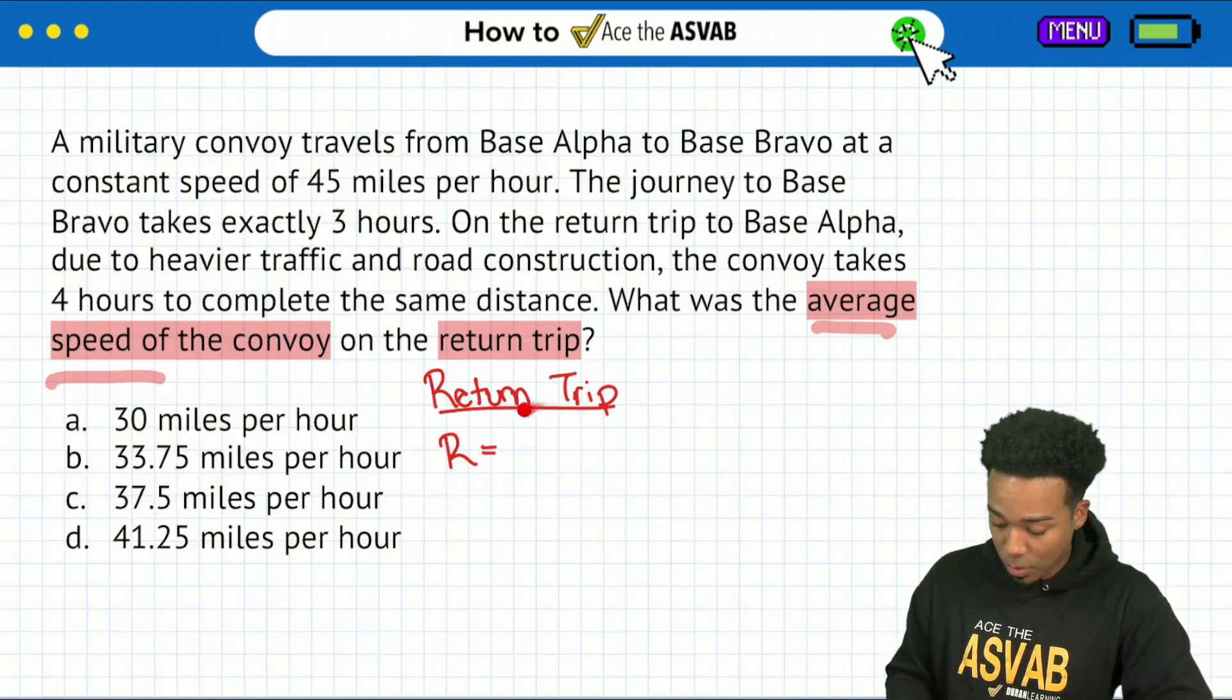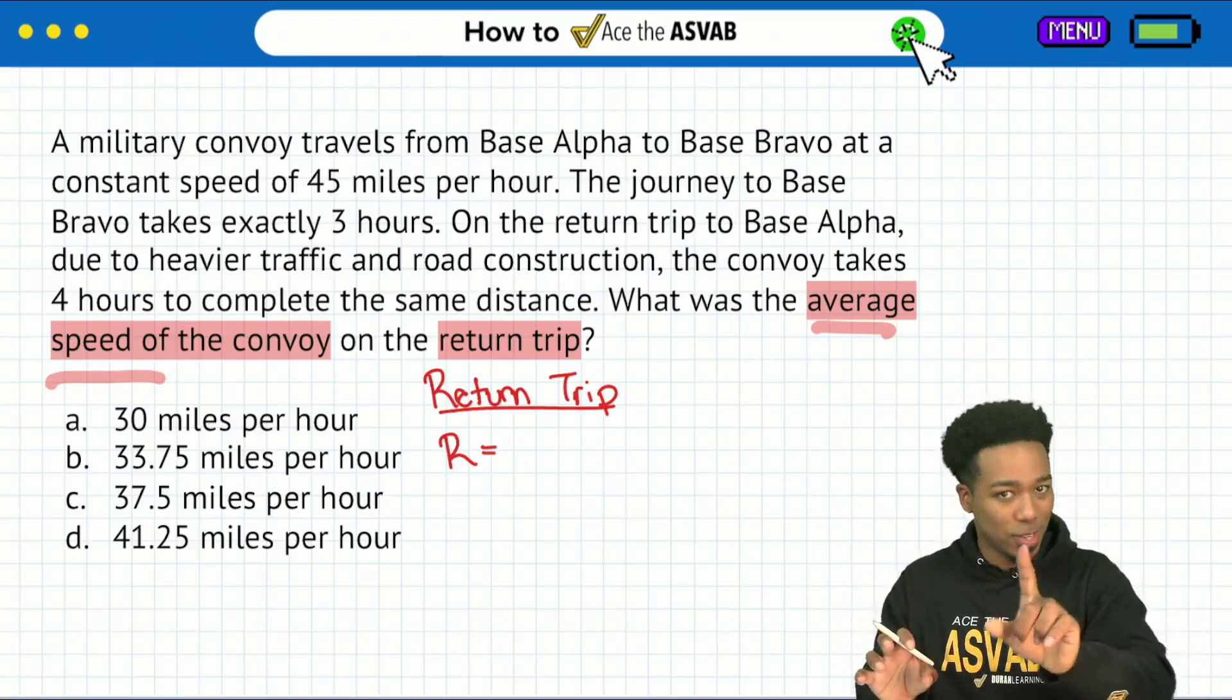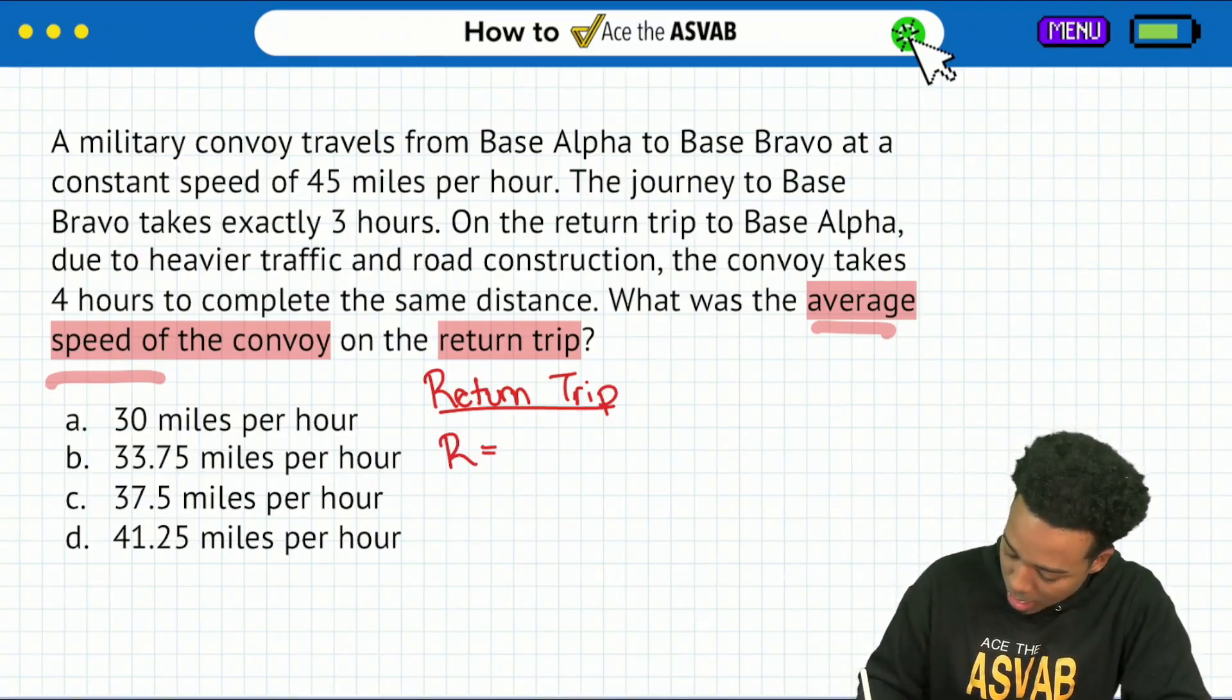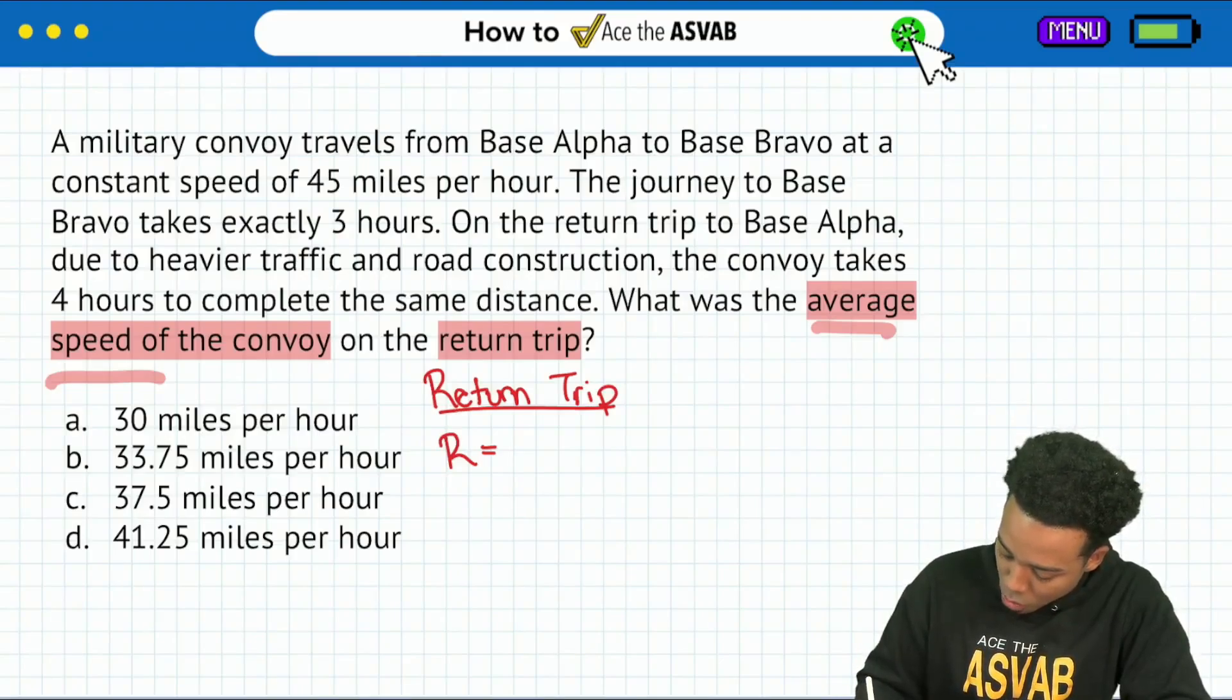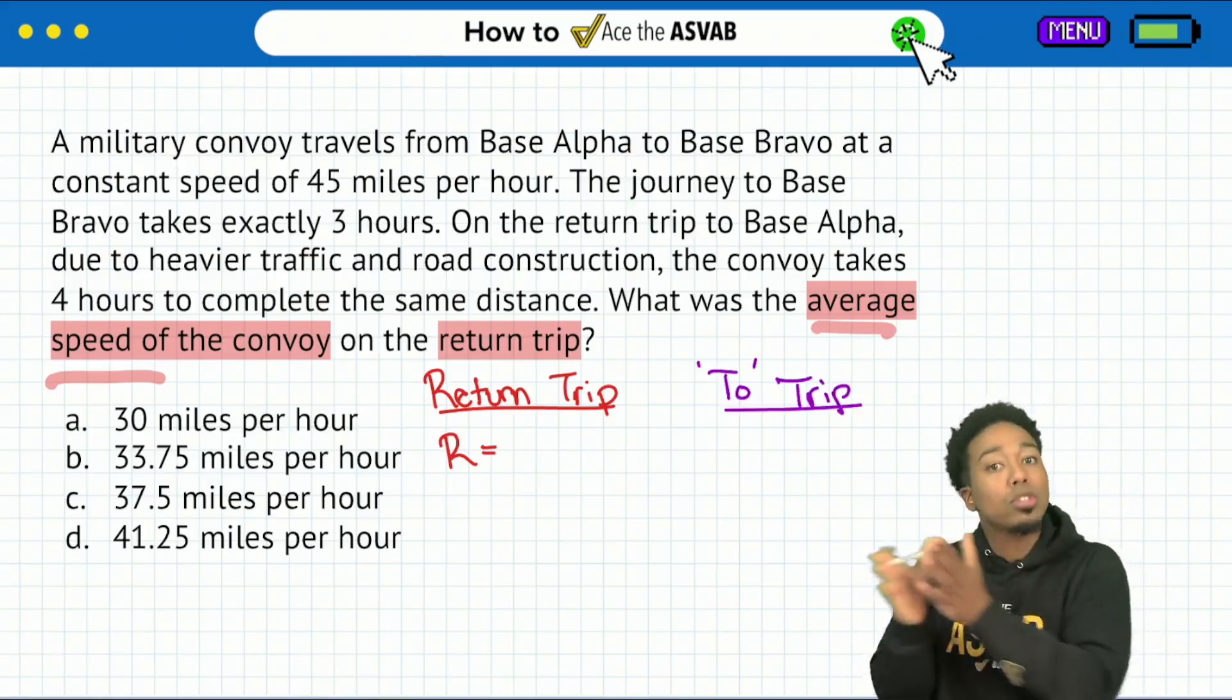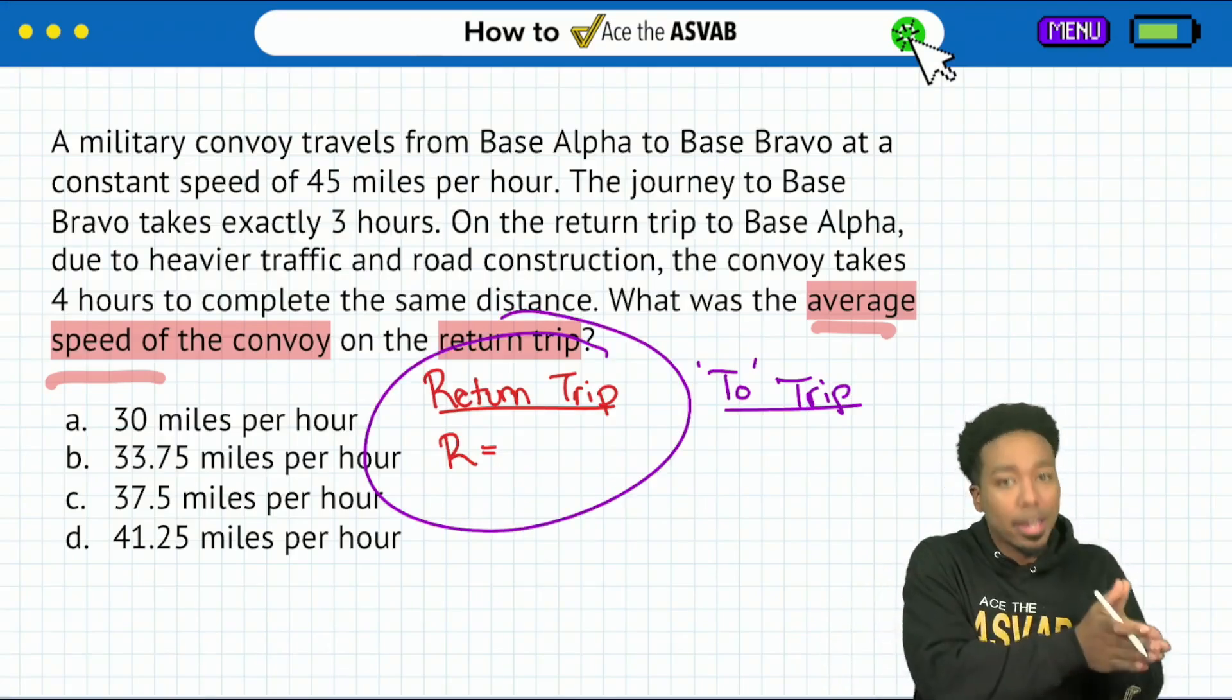Don't think that this is the rate that we're going to write in here, and this is the time that we're going to write in. No, no, no. We see that there's another scenario. So here's what we're going to do. We're going to write that other information over here. I'm going to say from the trip to base bravo. So going to base bravo. And then this over here represents the trip back to base alpha.